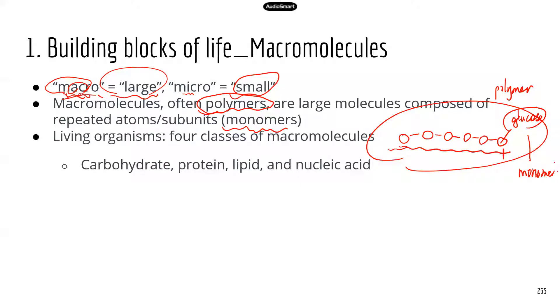Living organisms are composed of four groups of macromolecules, listed here. We'll go through each one in this lecture.